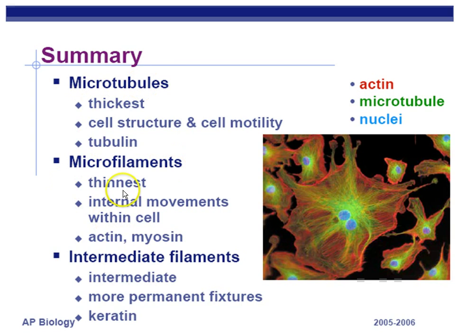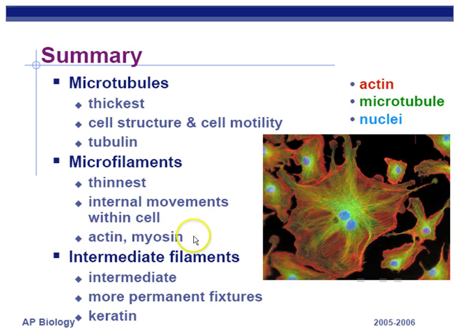Microfilaments are the thinnest, and there are two types: actin and myosin. There's a ring of actin that pinches the cell in two at the stage of cytokinesis after mitosis. Myosin and actin work together for muscle contraction inside your muscles, so you can imagine you have a lot of microfilaments within your muscle cells. Intermediate filaments, as the name implies, are in between the two sizes — one example is keratin — and they kind of hold things in place within the cell.